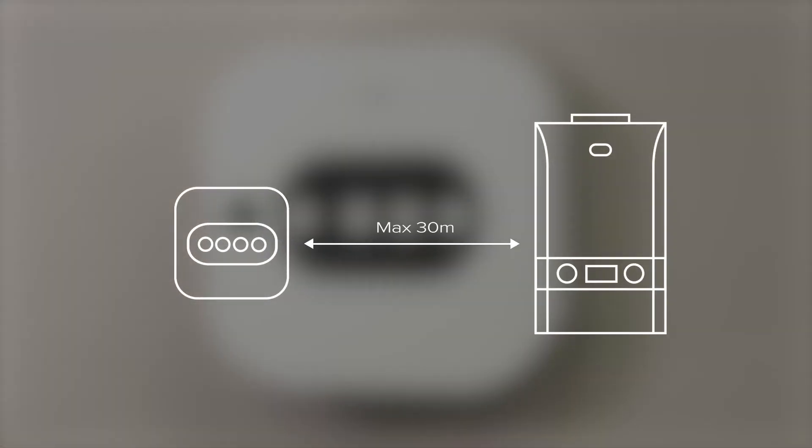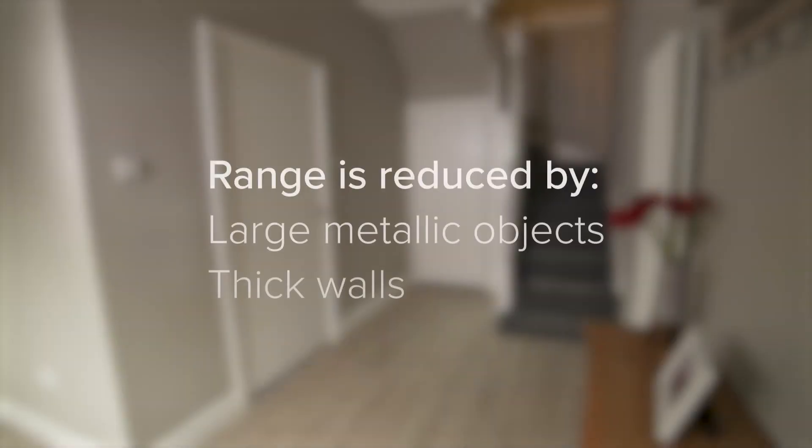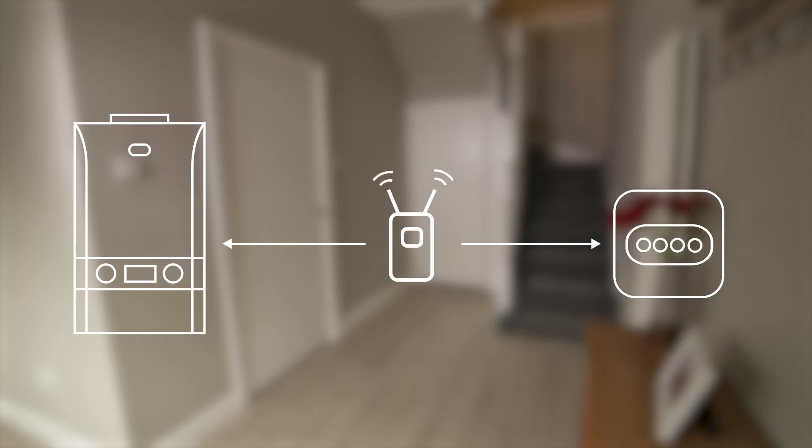The maximum range for this communication is up to 30 meters. Range is reduced by large metallic objects and thick walls. If the distance between the smart interface and smart wiring center is troublesome, you may wish to consider adding a Zigbee booster to the system to increase the range.